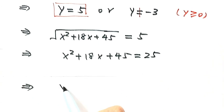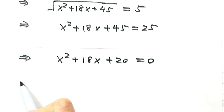Move 25 to the left-hand side. Combine with 45 to get 20. Then use the quadratic formula.